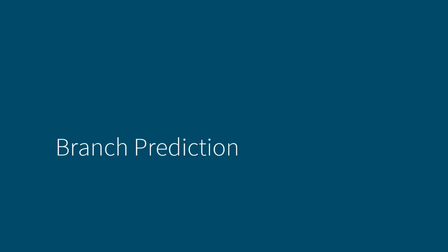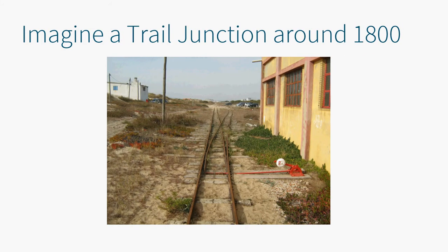First, about the concept of branch prediction. Let's imagine you are responsible for a trail junction around 1800, and your job is: if you hear a train coming, you come out of your house, you stop the train, you ask the driver where he wants to go, and then based on this you put the junction either to the left or to the right. Then the slow train slowly starts moving on its way, and it all takes very long.